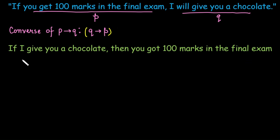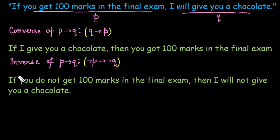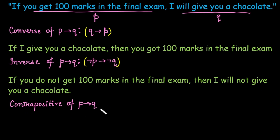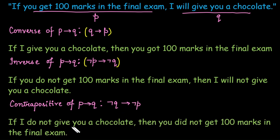The inverse of the conditional statement is not P implies not Q — equivalent to: if you don't get 100 marks in the final exam, then I will not give you a chocolate. The contrapositive is not Q implies not P — equivalent to: if I do not give you a chocolate, then you did not get 100 marks in the final exam.